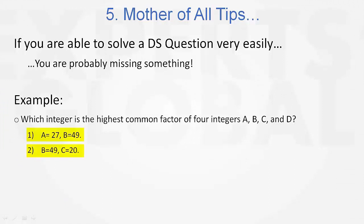And see what you are missing on this one here. If a is 27 and b is 49, a and b have nothing in common. Highest common factor of a and b is 1. No matter what c and d are now, if a and b have nothing in common, a, b, c, and d are not going to have anything in common.